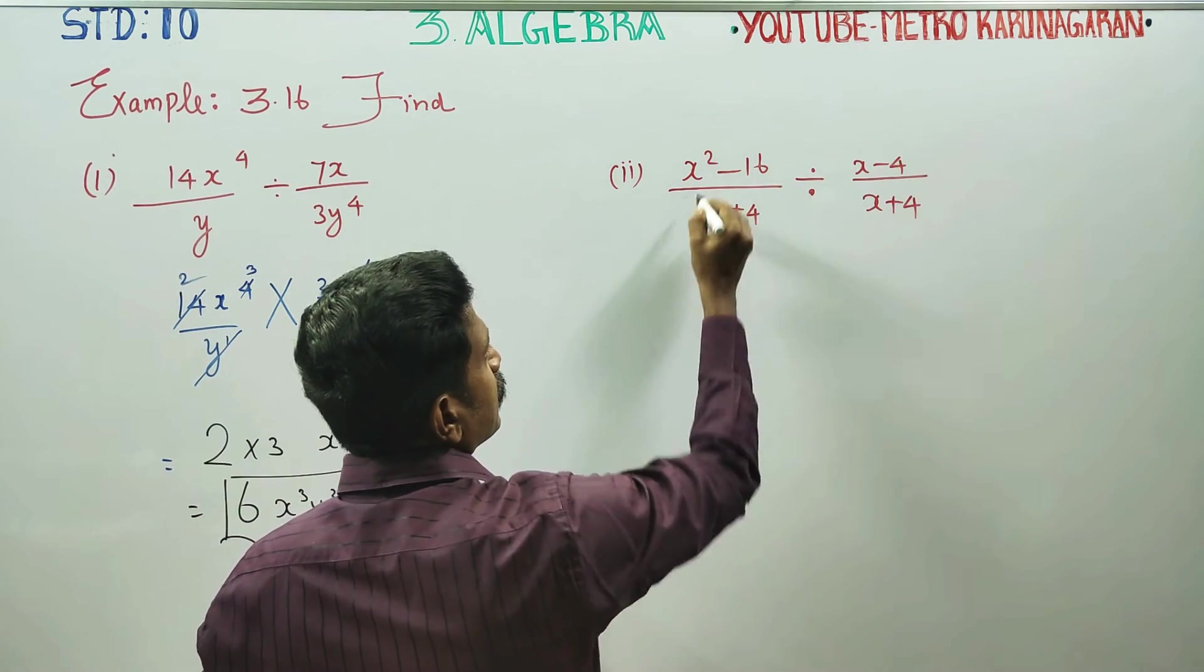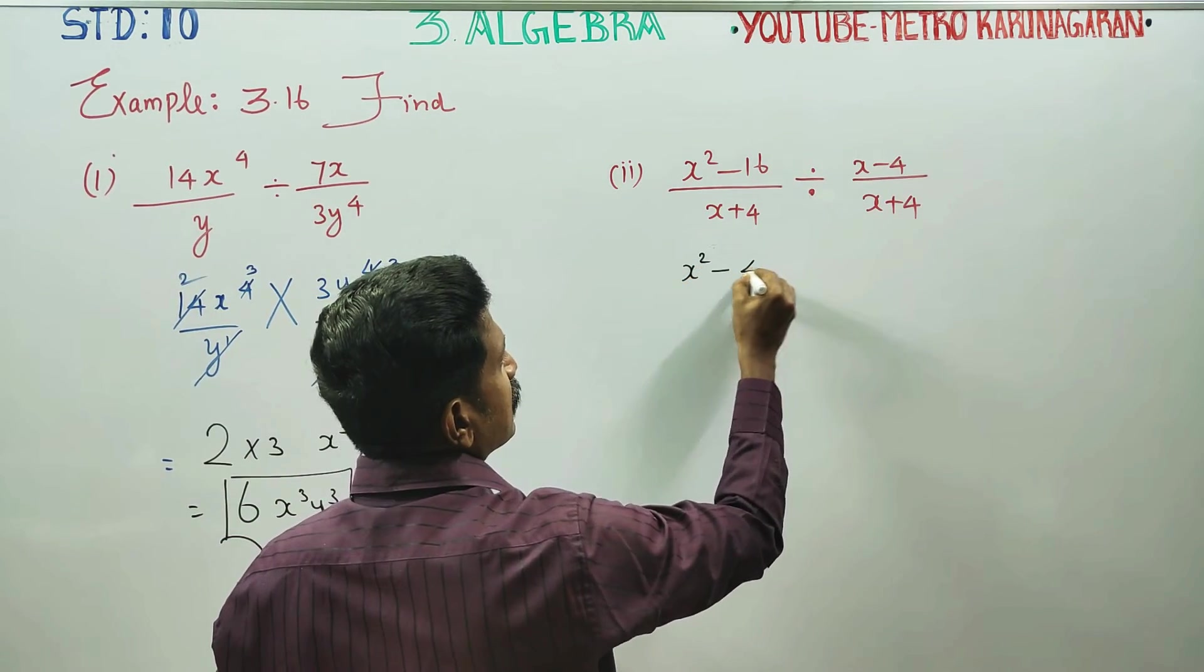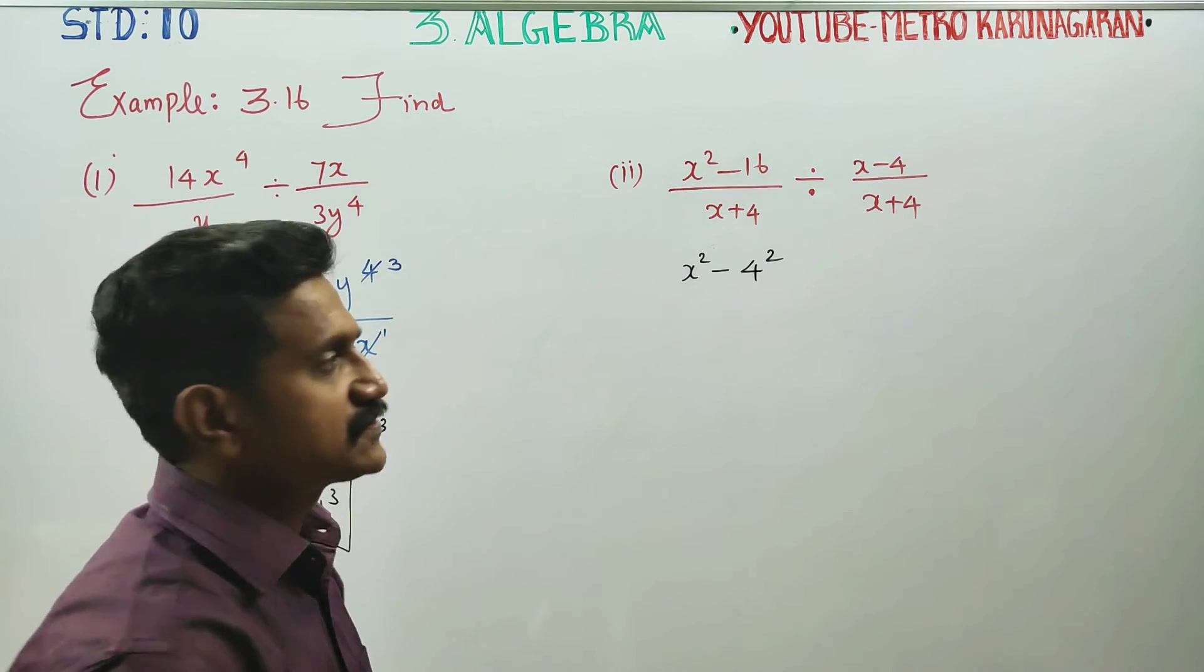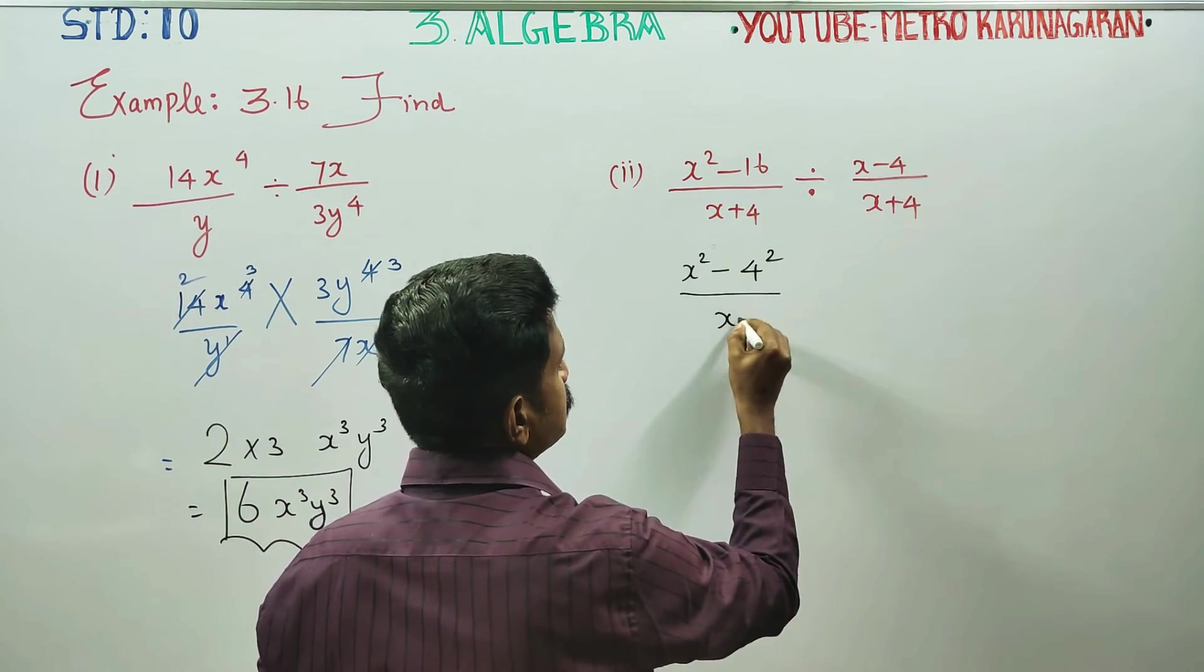Coming here, x squared minus 16 can be written as x squared minus 4 squared. 4 squared is 16, by x plus 4.